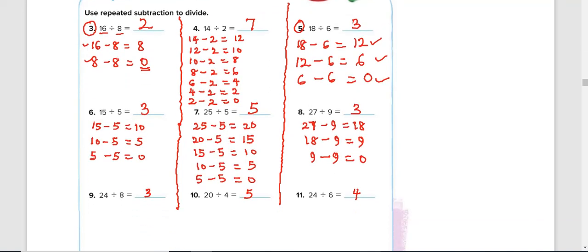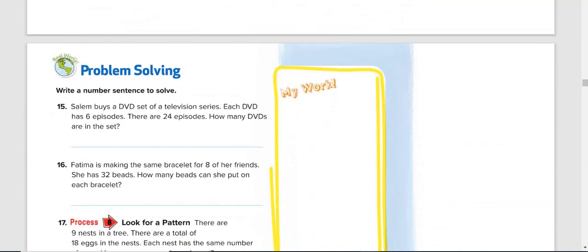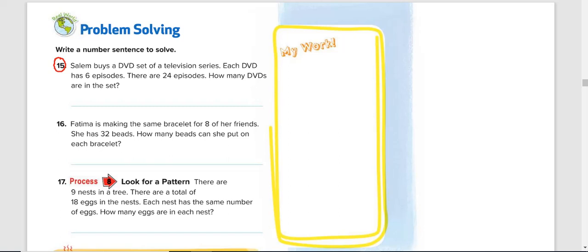Okay, this is what we have. Alright, so let's quickly take a look at some problem-solving questions. We're going to read the question to understand what we have to do. Question number 15: Salim buys a DVD set of a television series. Each DVD has 6 episodes.